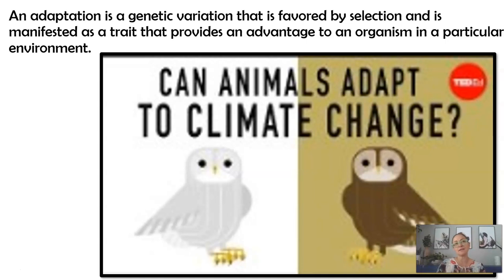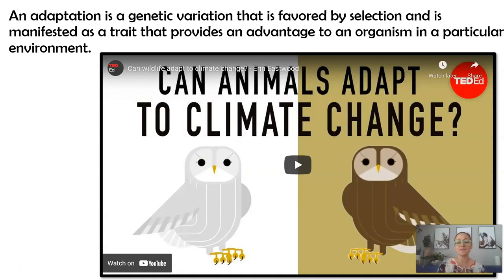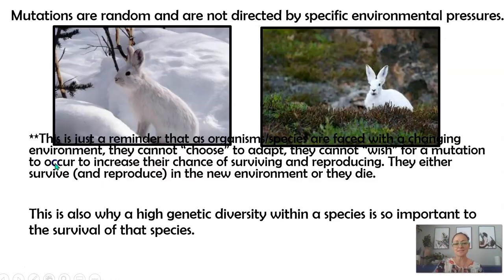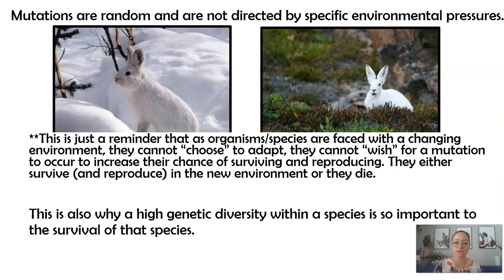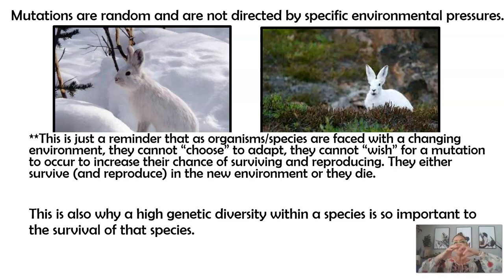When we really think about it, can species evolve to keep up with these changes? There's a great TED-Ed video on animal species adapting to climate change that I highly recommend. Just because it would be helpful for a rabbit to have brown fur in a snow-free environment doesn't mean that is going to happen. Mutations are random and not directed by specific environmental pressures. Ecosystems are changing due to climate change, habitat loss, and pollution — very quick amounts of change in a short amount of time.